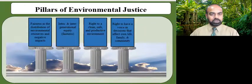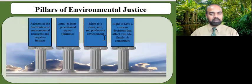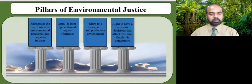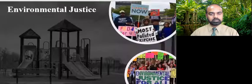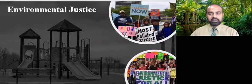There are four pillars of environmental justice: first, fairness in the distribution of environmental resources and negative impacts; second, intra- and inter-generational equity or fairness; third, the right to a clean, safe, and productive environment; and fourth, the right to have a voice in decisions that affect one's own life, family, and community. Community activists and children living in polluted neighborhoods and communities can be seen protesting in the streets and demanding environmental justice.